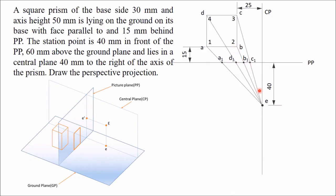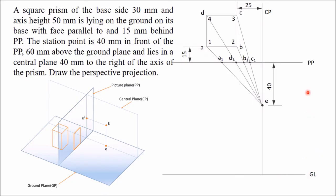With the top view complete, we now draw the front view, where the perspective view will be obtained. First draw the ground line parallel to the picture plane. You can draw it anywhere, but it should be at a distance greater than the sum of the two key distances — e-dash to e (40mm) and e to ground (60mm) — so more than 100mm total. Draw this ground line at a distance of about 105mm or 110mm for a clearer diagram.